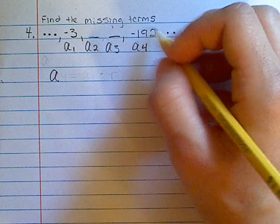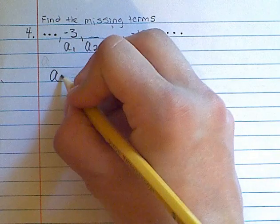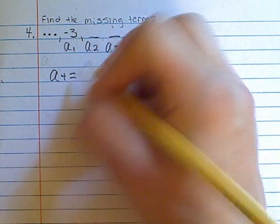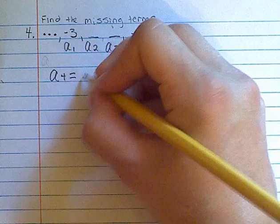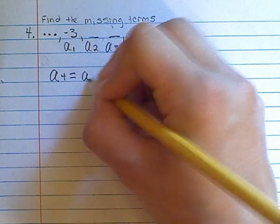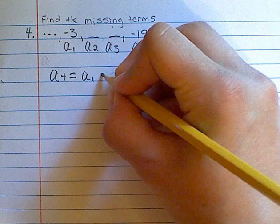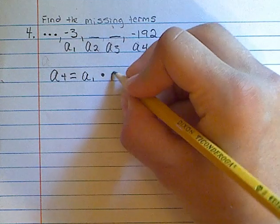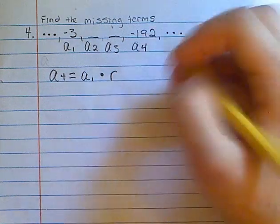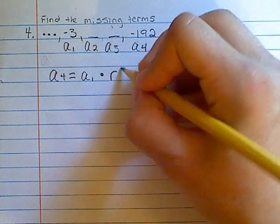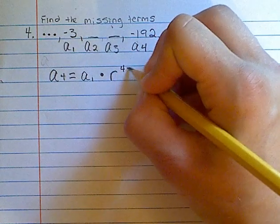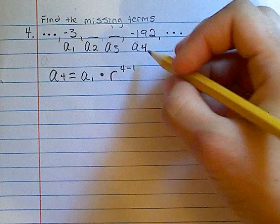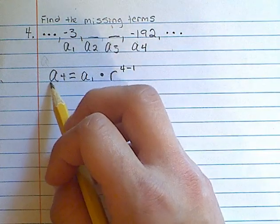So we can use the equation where our last known term a4 is equal to a1, our first known term, times the ratio r to the power of 4 minus 1. I'm going to use 4 because our term is a4.